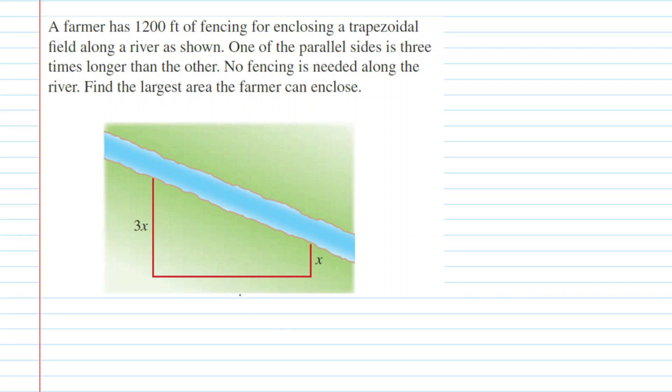First, we will label the horizontal segment of the fence as y. And then after doing so, what we need to do is come up with what I like to call a constraint equation. When solving any optimization equation, you need to find a constraint.